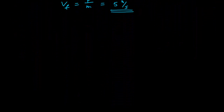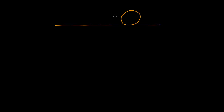Let's take a look at a different example. In this case, I have a large ball here at rest with a mass of 10 kilograms, initially at rest. I'm going to take a very small mass — m is 0.1 kilograms — and it's going to collide with the large mass. It's going at an initial incoming speed of 50 meters per second.